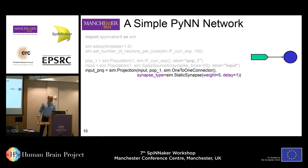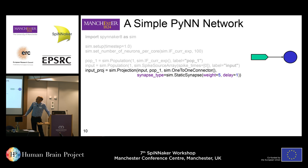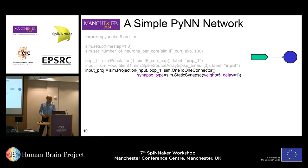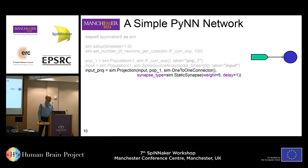Having two populations without connecting them doesn't mean anything, so for that we use a projection. In the projection you have to say where it's coming from and where it's going to. Then you tell it how to connect — the simplest one is one-to-one, connecting neuron one from input to neuron one of output, neuron two to two, and so on until one of the populations runs out of neurons. Then we give it a synapse type where we define the weight and the delay. Here I've used a high weight of 5, which is enough for one single spike to cause the voltage to go up high enough to spike again.